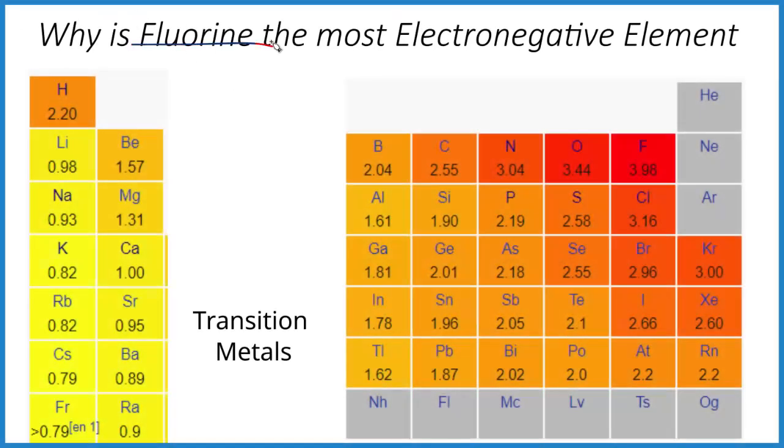A viewer asked me why fluorine is the most electronegative element here on the periodic table. So let's take a quick look at that. So here is fluorine right here.